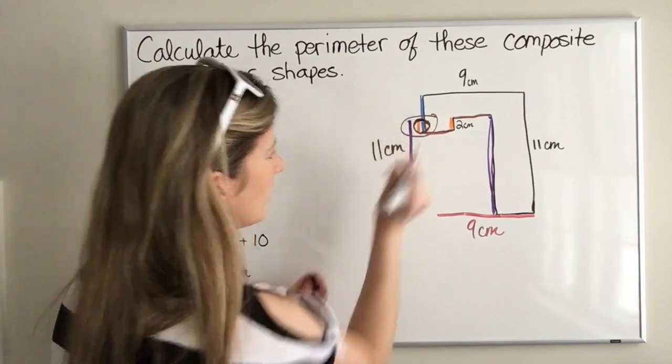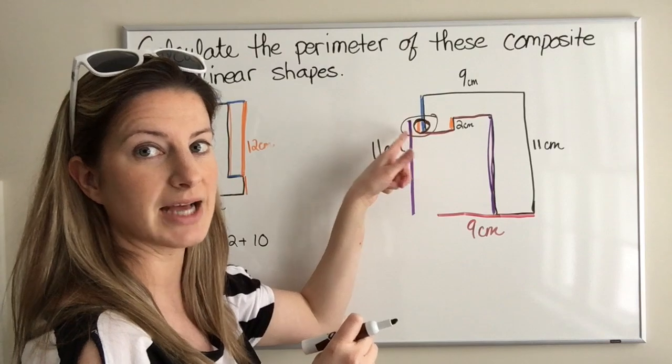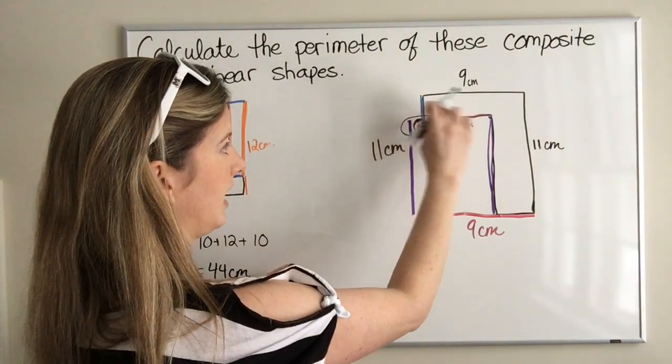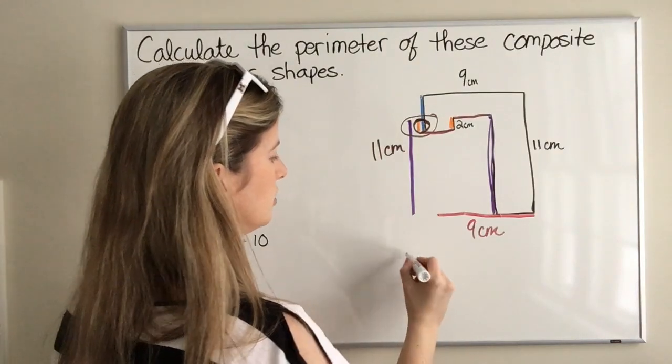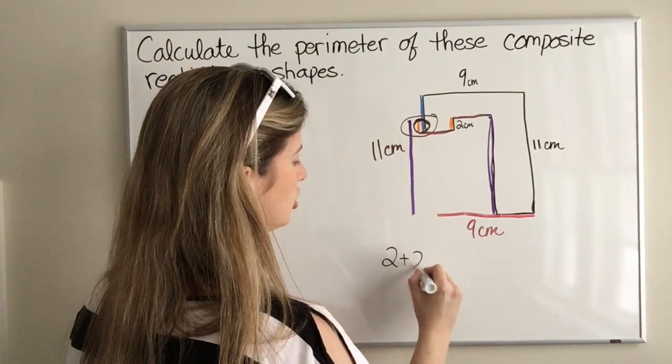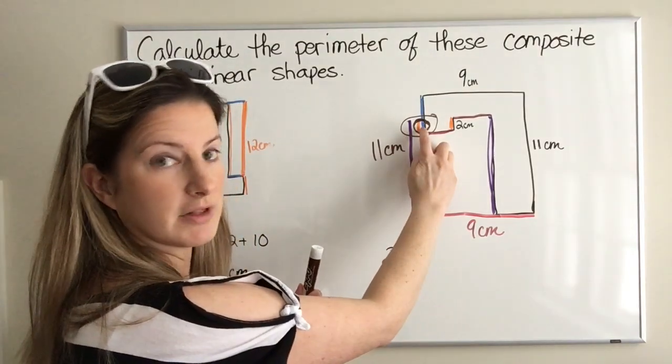We need to realize that this right here, blue and orange, need to be counted as well. The blue being this part of this side and the orange being this piece right here. What we need to do is we need to do 2 plus 2, because that's the length of the orange and then that part of the length of the blue.